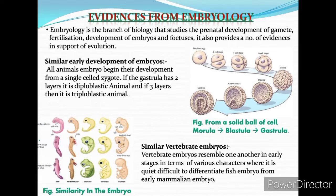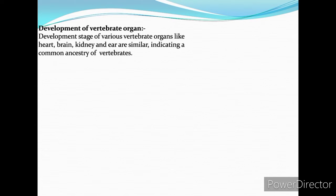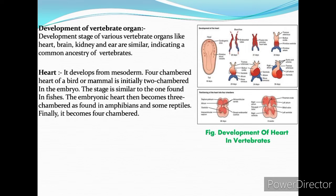The next point is similar vertebrate embryos. Vertebrate embryos resemble one another in early stages in terms of various characters, making it quite difficult to differentiate fish embryos from early mammalian embryos. Embryos of closely related animals resemble each other for longer duration compared to embryos of distantly related animals. Development of vertebrate organs — the heart develops from 2-chamber to 3-chamber to 4-chamber — and organs like heart, brain, kidney, and ear are similar, indicating a common ancestry of vertebrates.